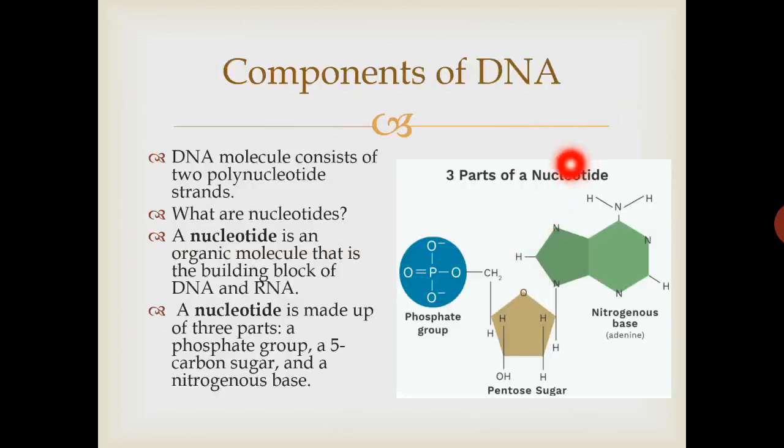Components of DNA: DNA is a polynucleotide consisting of two polynucleotide strands. Poly means many, so it consists of many nucleotide groups. What is a nucleotide group? A nucleotide group consists of three components: a phosphate group, a pentose sugar...